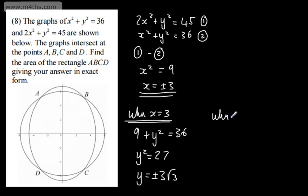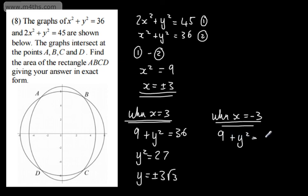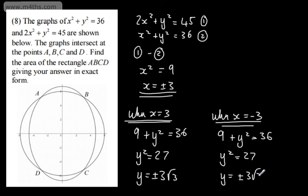When x equals negative 3, we get exactly the same result. Substituting in, negative 3 squared is 9, plus y squared equals 36, giving y squared equals 27, so y equals plus or minus 3 root 3.